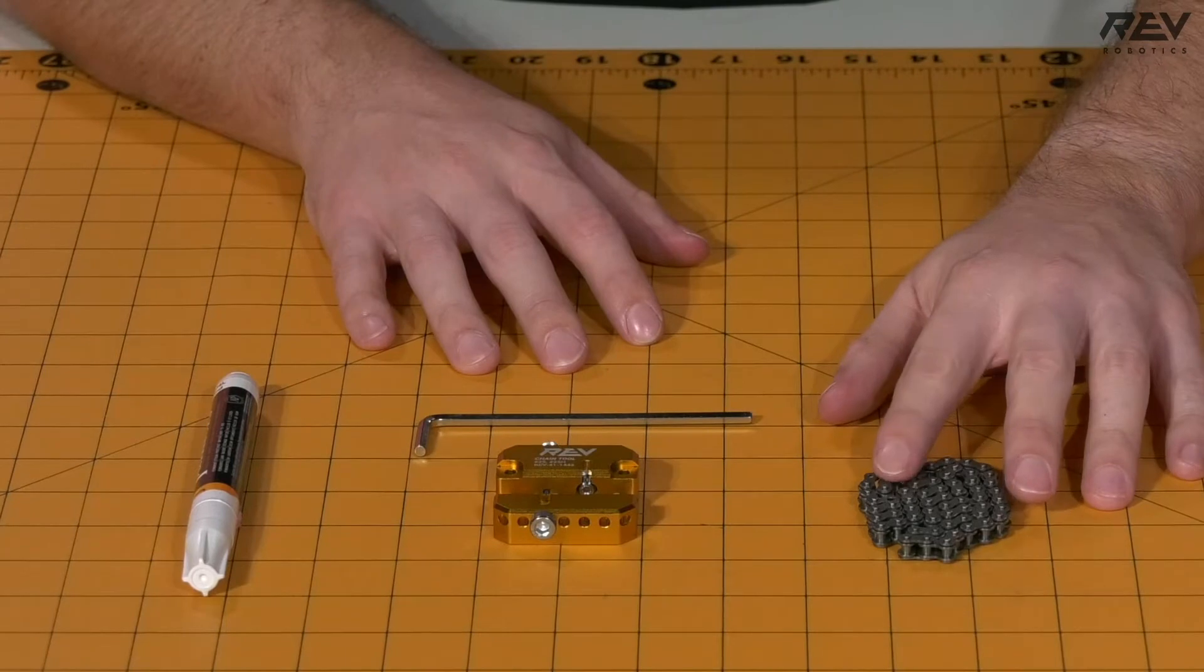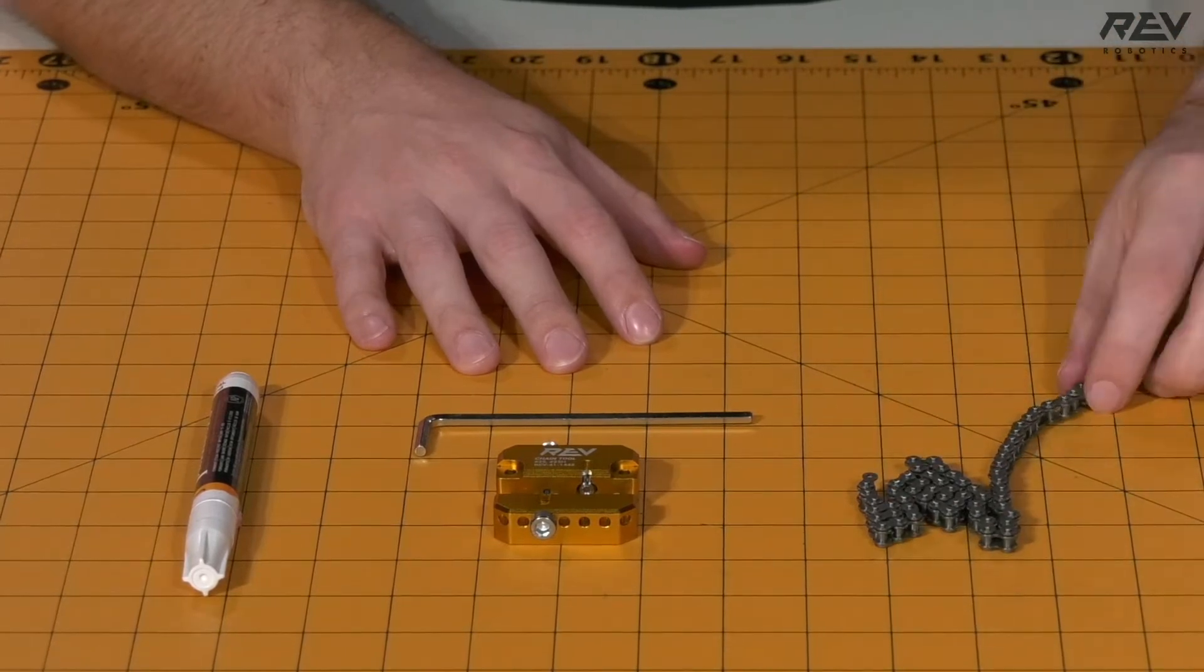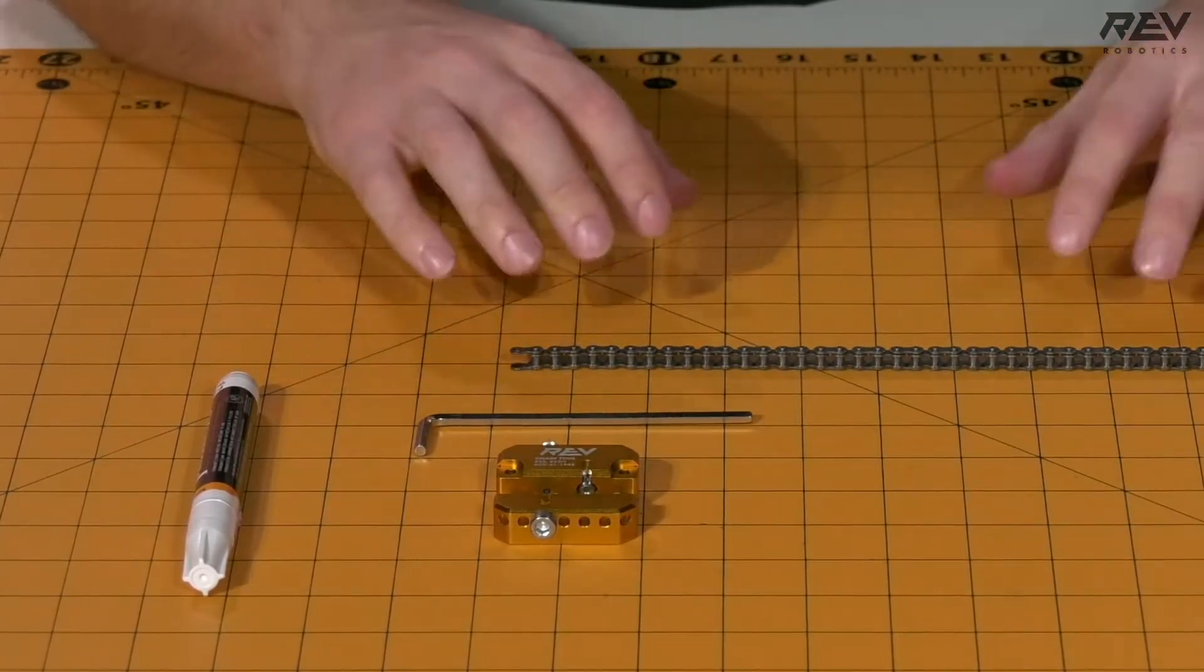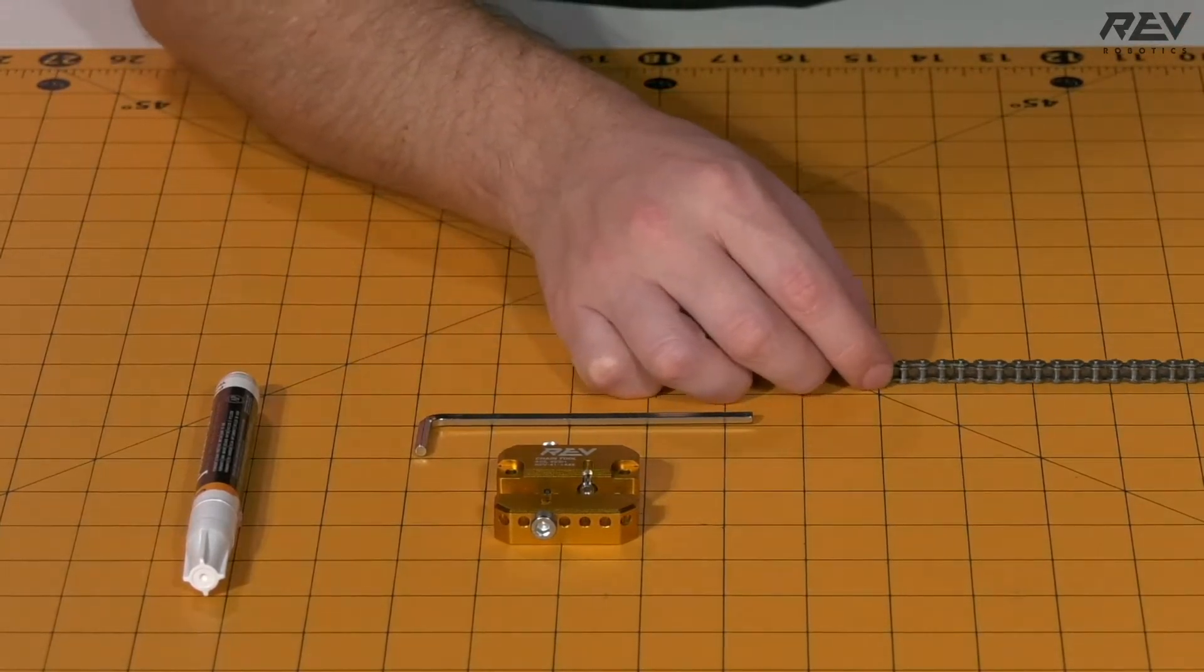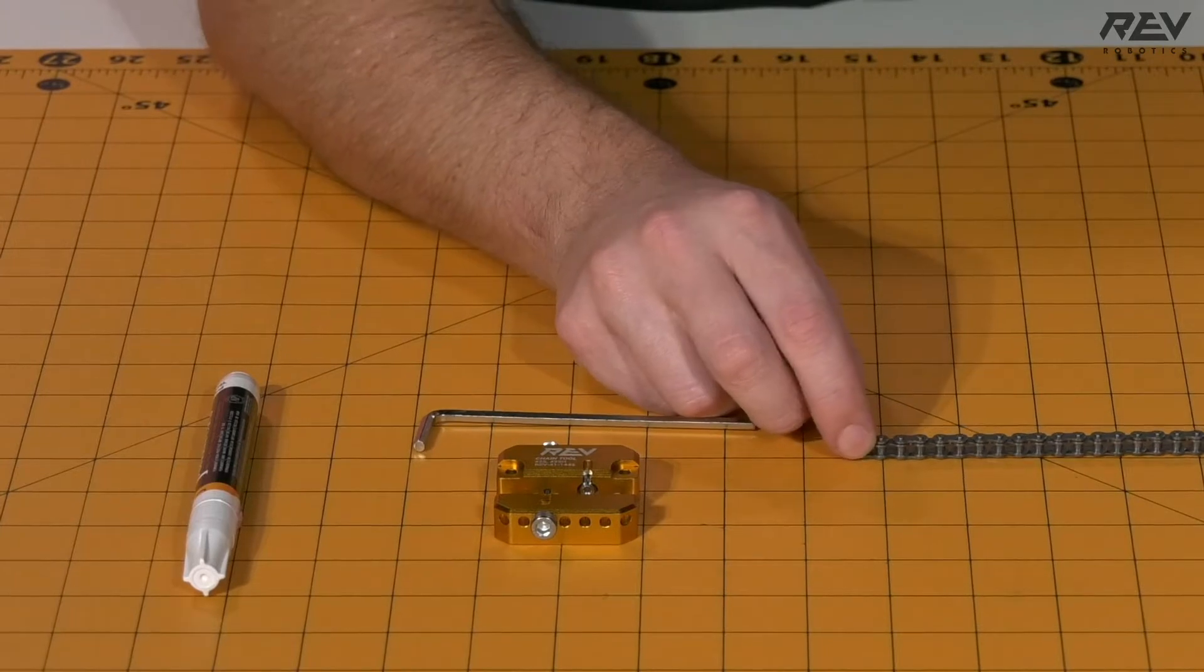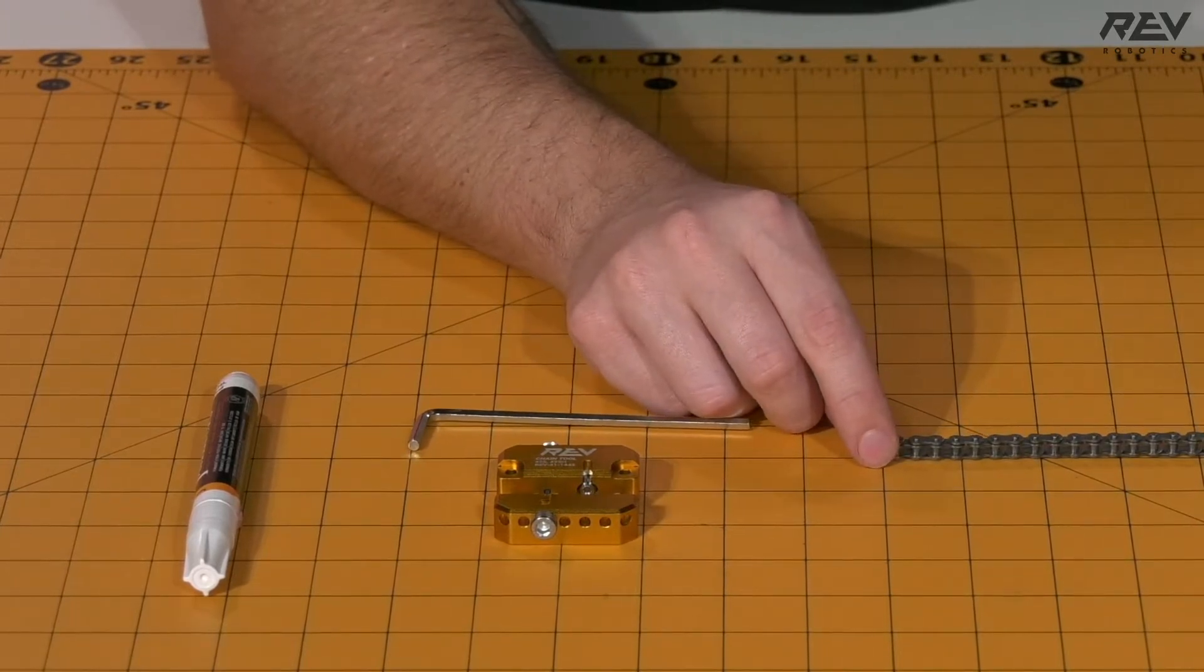Let's start by taking our chain and we need to be able to measure out the length. For this build we need to have chain links that are 56 links long.